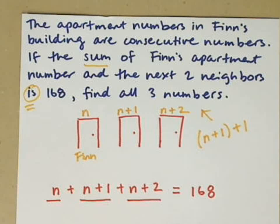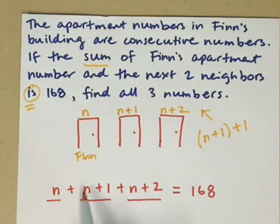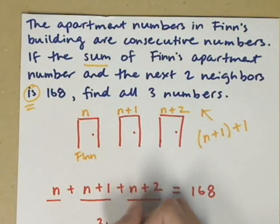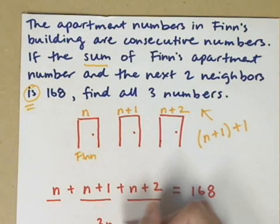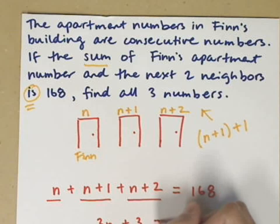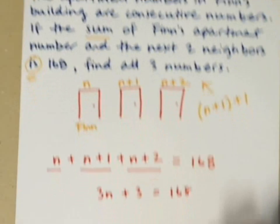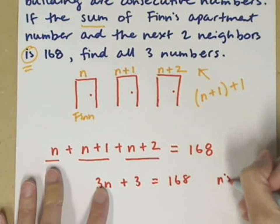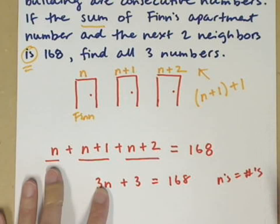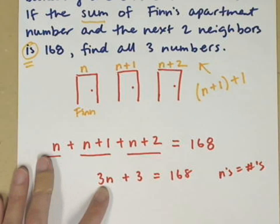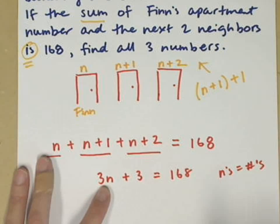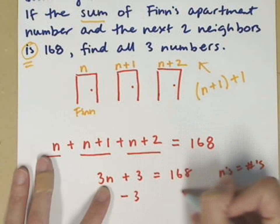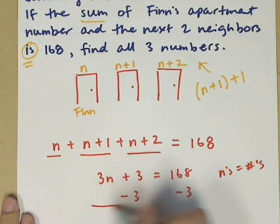Okay, now I've got my equation and I can go ahead and solve it. I'm going to collect my Ns. I've got 1, 2, 3 of them, so I write that as 3N. 1 and 2 is 3, so 3N plus 3 is equal to 168. In this equation, I want Ns on one side and numbers on the other side. So I'm isolating my N term and that's that 3N. I have that 3 added, so I subtract it.